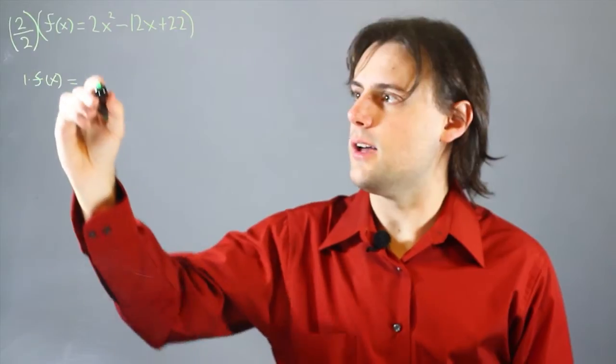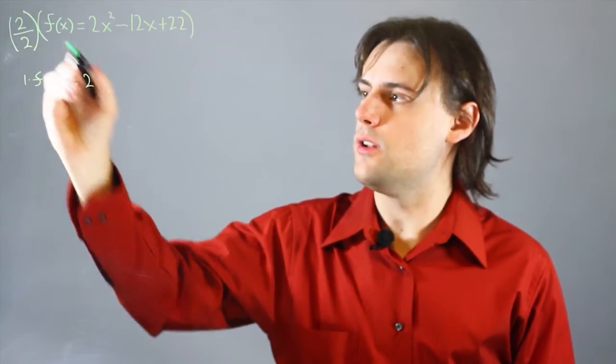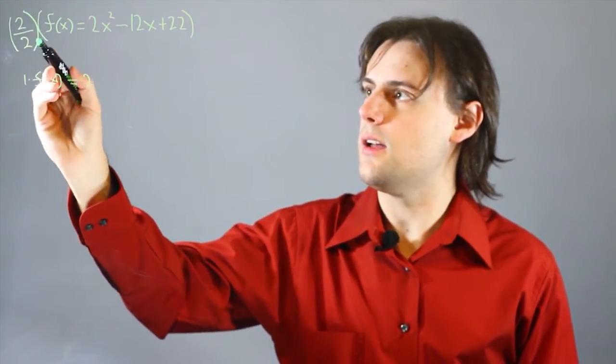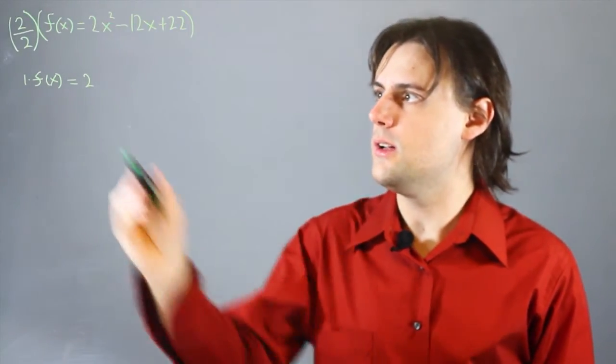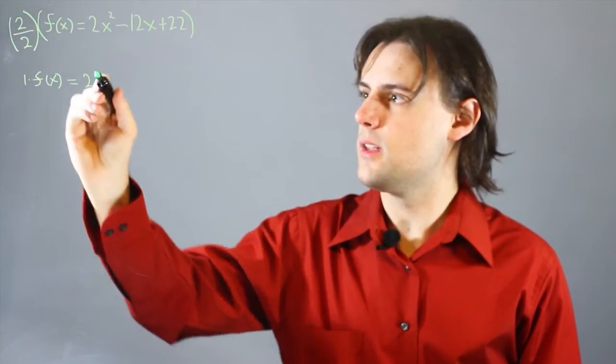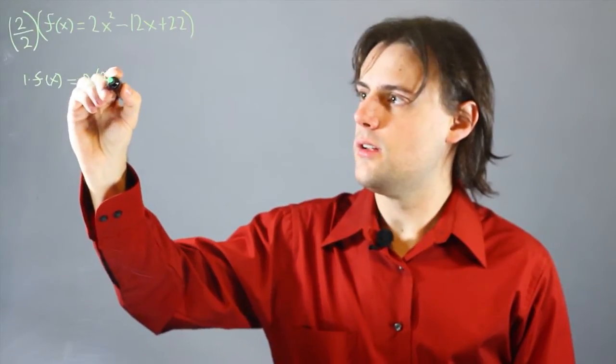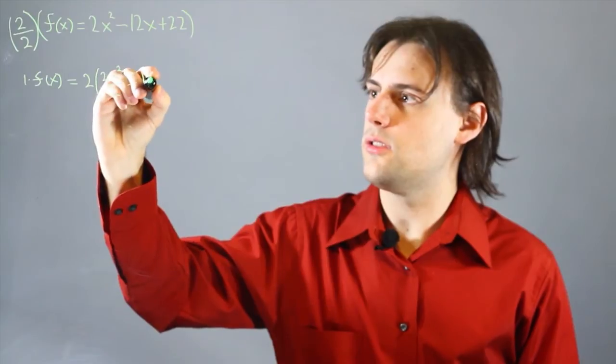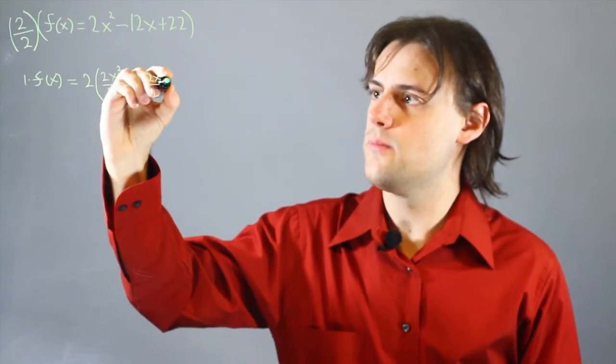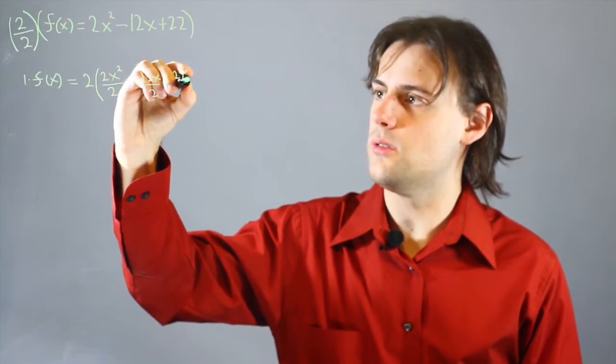And on the right-hand side, I leave the 2 in the numerator untouched, and I divide the coefficients of each of the terms in the polynomial by this denominator. So, I have 2x squared divided by 2 minus 12x divided by 2 plus 22 divided by 2.